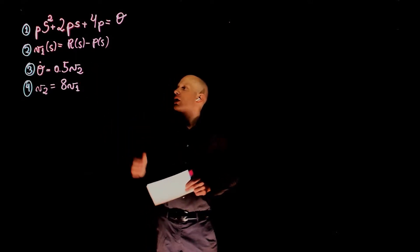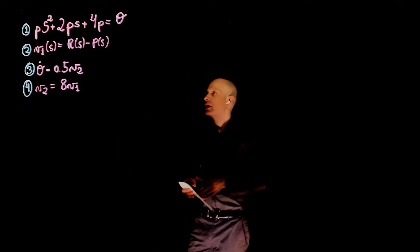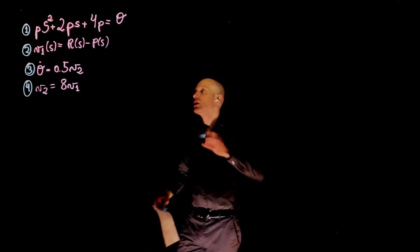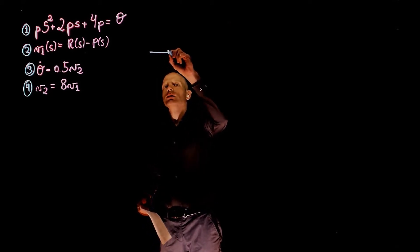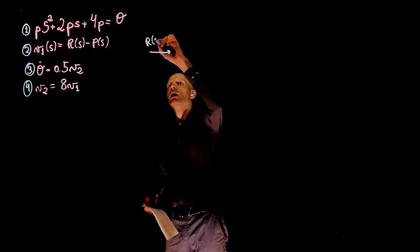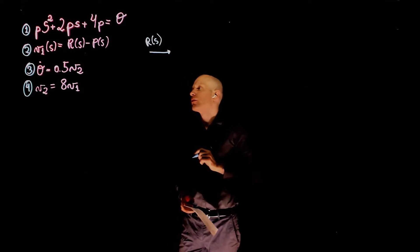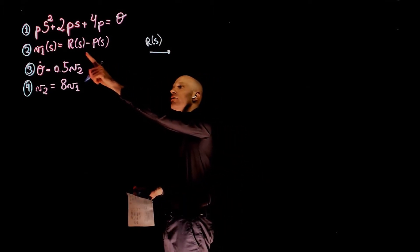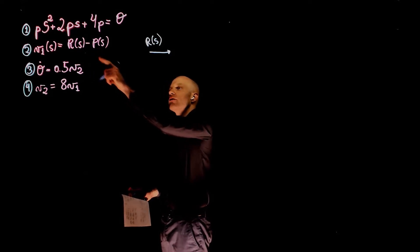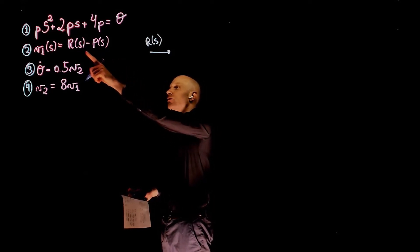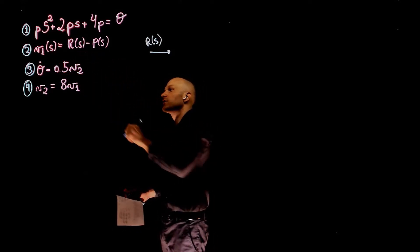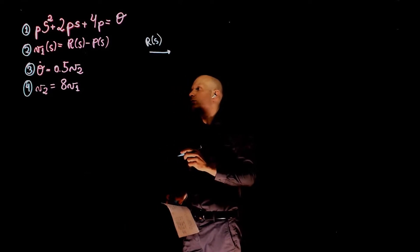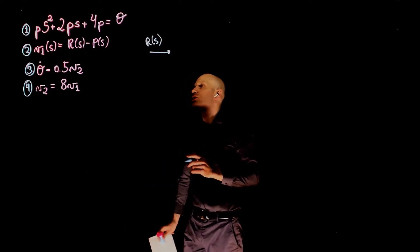We notice our input showing up here. We could start the block diagram there by representing the input r of s. By looking at equation 2, if we subtract p of s, the current position, from r of s, that gives v1, v1 being the amplifier input voltage.